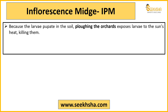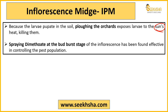Iski management aap kaise kar sakte ho: orchard ko plow karo properly taaki jo sun ki heat hai ussse larva directly exposed ho jaaye and ultimately sun ki heat usko kill kar de. Uske ilaawa jab aapka bud burst stage hai yaani ki pehli stage hai, usme aap dimethoate ko spray kar do — bahut zyada der mat karo. Agar timely aap isko spray kar doge toh aap apne mango orchard ko protect kar paaoge.